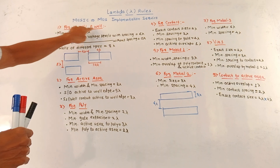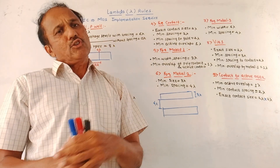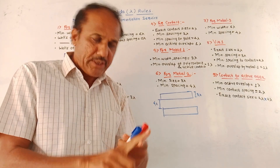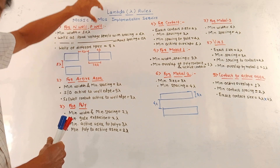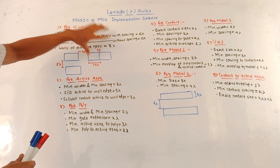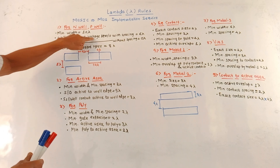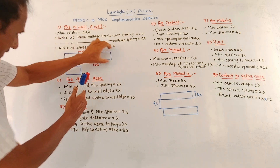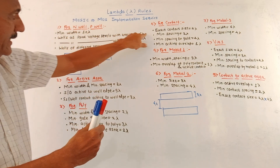The first rule is for N-well or P-well, where well stands for substrate. For N-MOSFET we use P-type substrate and for P-MOSFET we use N-type substrate. For N-well or P-well, the minimum width is 10 lambda — as shown in the diagram. Wells at the same voltage level have a minimum spacing of 6 lambda. Wells at the same voltage level that merge have 0 lambda spacing.